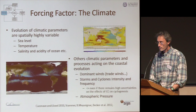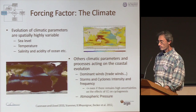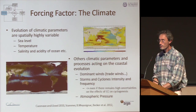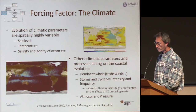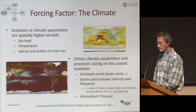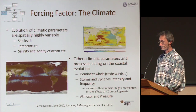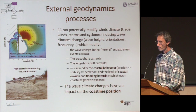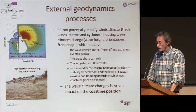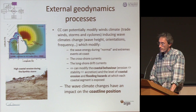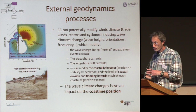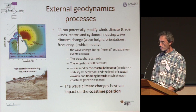Regarding climate, we have evolution of climatic parameters which are partially highly variable — sea level, temperature, salinity, and acidity of the ocean. Other climatic parameters acting on coastal evolution are dominant winds such as trade winds, and storm and cyclone intensity and frequency, even if for cyclones there are some uncertainties about the effect of climate change on cyclogenesis. Climate change can potentially modify wind climate, trade winds, storms, and cyclones, inducing wave climate change in orientation, frequency, and wave energy during normal and extreme events at the coast — affecting cross-shore currents and longshore drift currents — which can modify coastal behavior from erosion to stability or accretion, and the level of coastal erosion and flooding hazards at each coastal segment.